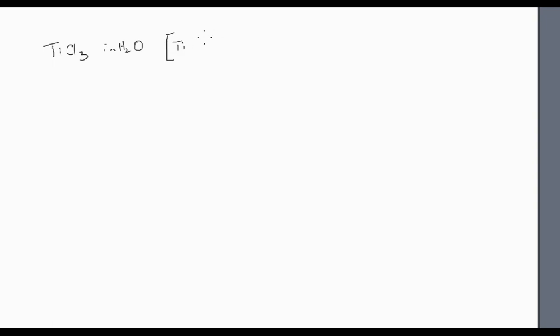We start with square brackets with titanium and we have six waters, and outside the square brackets we have three unidentate chloride ions, which therefore means that everything inside the brackets adds up to being 3 plus.